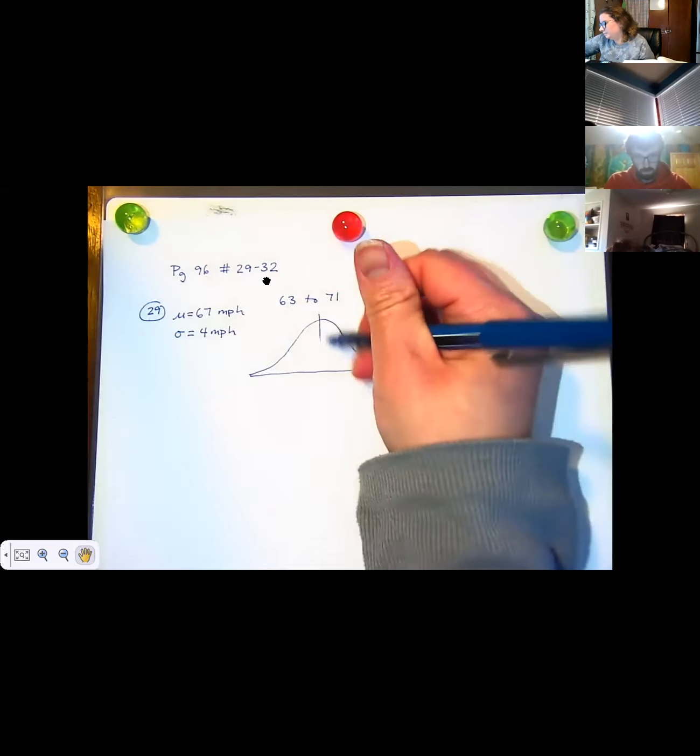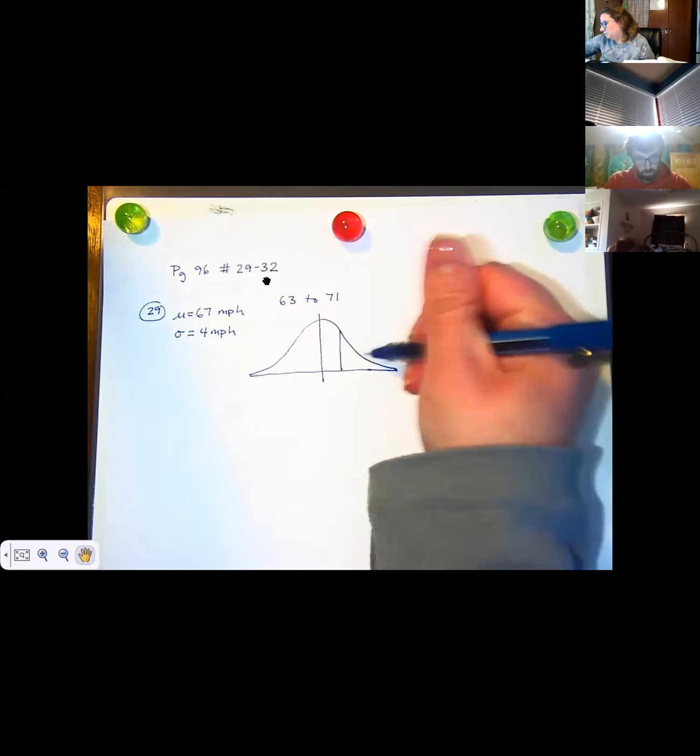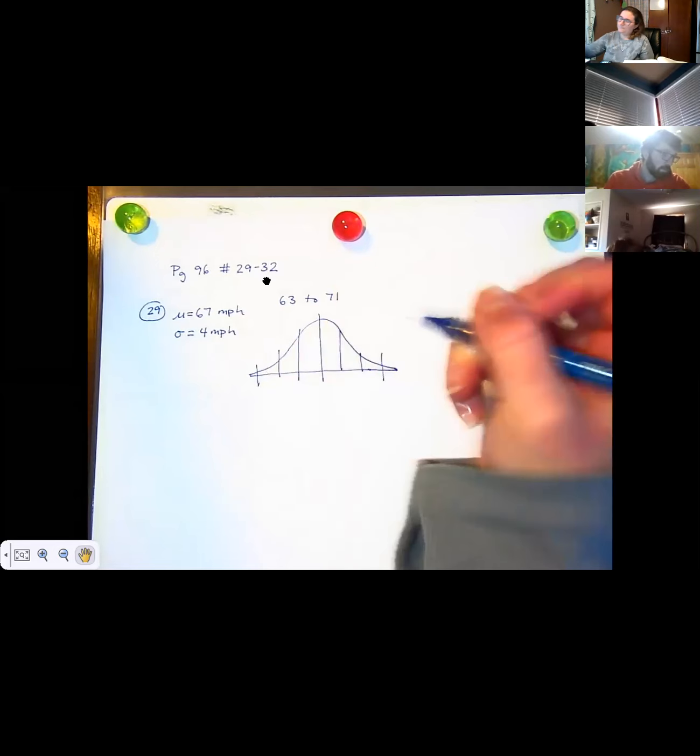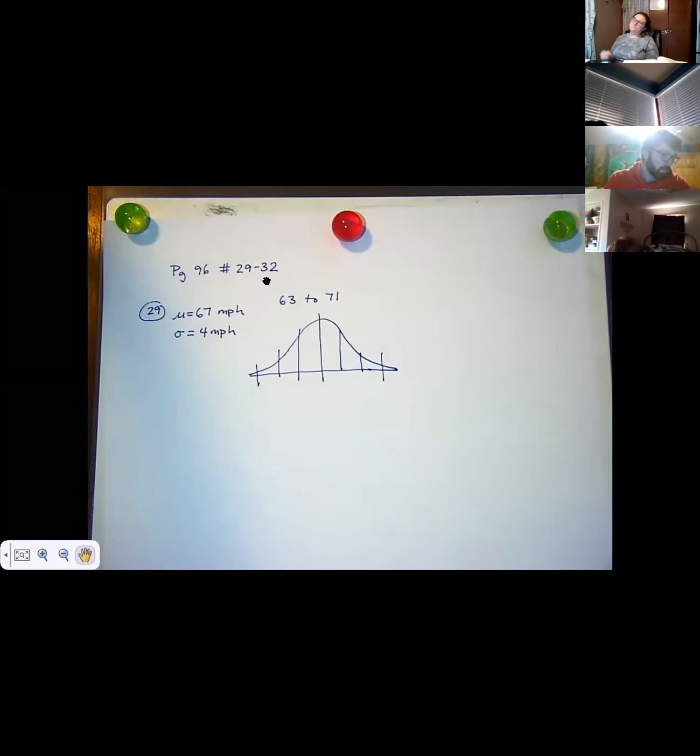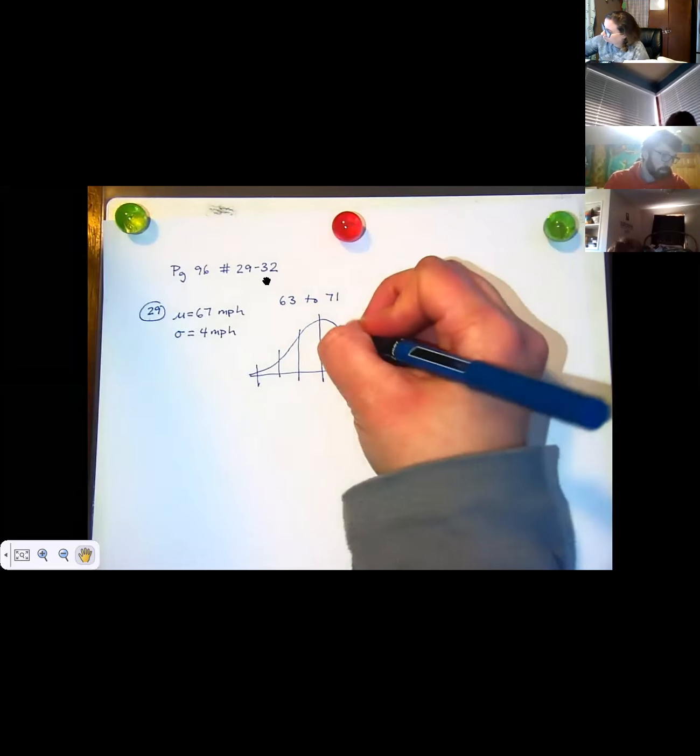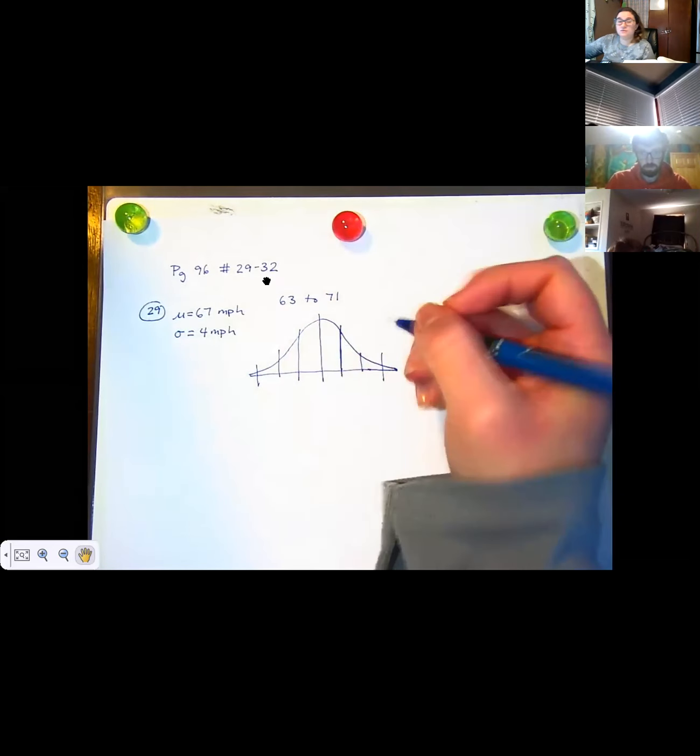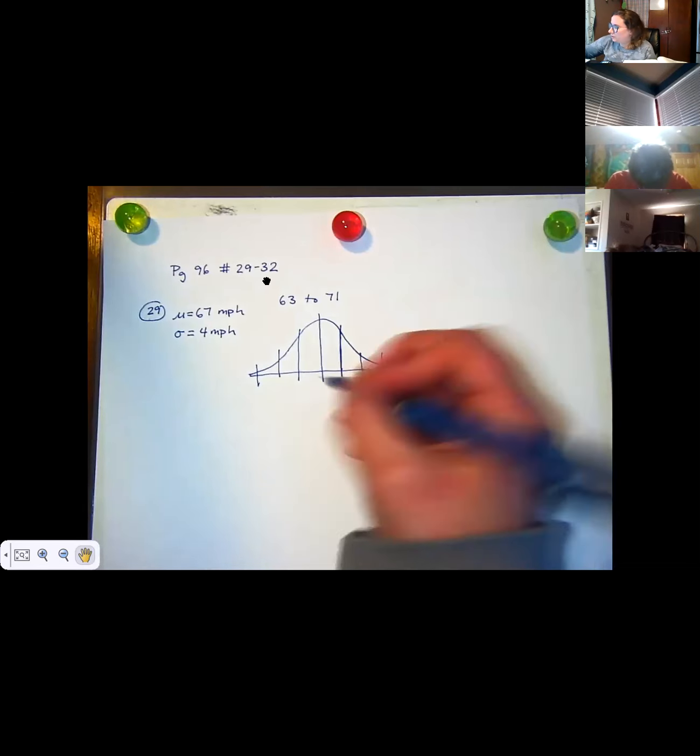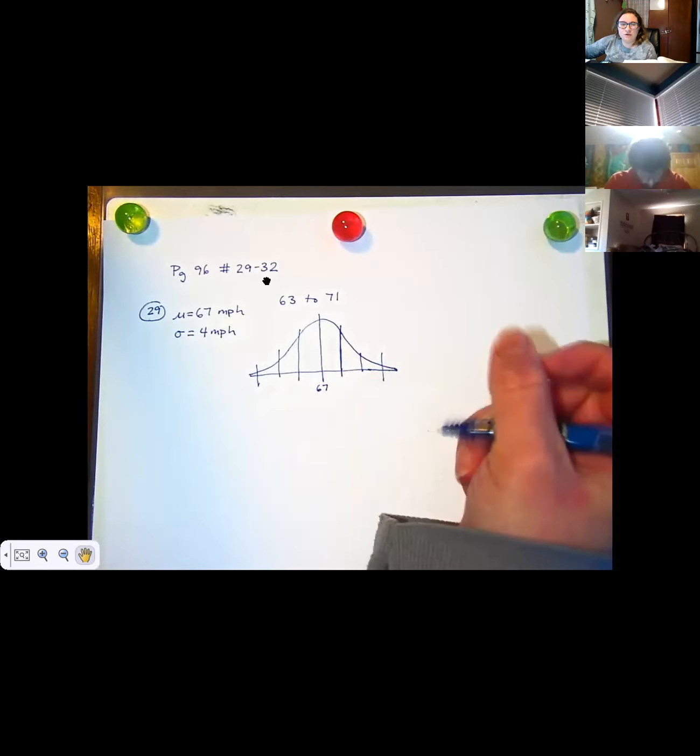It is surprisingly hard to do. That one wasn't so bad. All of these questions are going to be really exact, which is nice. And I'll tell you how to figure out not exact standard deviations later. But right now the answer is always going to be one standard deviation, two standard deviations, three standard deviations. So the mean is 67. So I'm going to put that right in the middle.